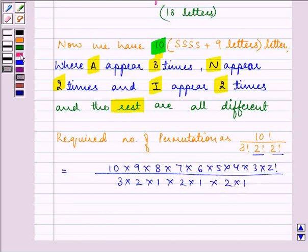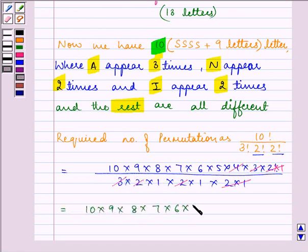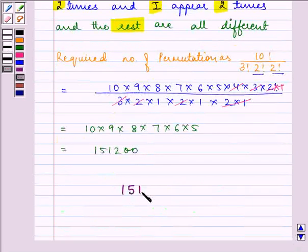On solving, we have 10 into 9 into 8 into 7 into 6 into 5. That is equal to 151,200. And this is our answer.